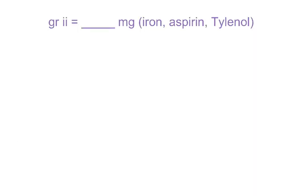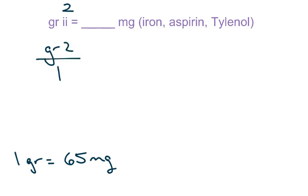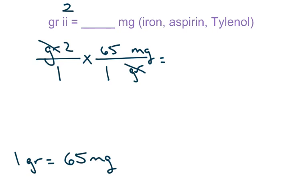This time we have grains, but it is Tylenol, Aspirin, or Iron. So this conversion factor is 1 grain equals 65 milligrams — that is only for Tylenol, Aspirin, or Iron, and we will tell you. Also, you have to know your Roman numerals: ii equals 2. So you take what they give you, put it over a 1, and multiply by the conversion factor. One grain is 65 milligrams — cancel your grains, multiply straight across the top: 130. Multiply straight across the bottom is 1. Write the unit left over: 130 milligrams.